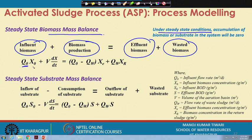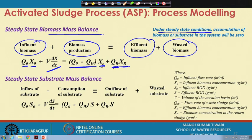Q₀ is the initial discharge and X₀ is the initial concentration. Q₀ × X₀ plus the rate of biomass production — V times dX/dt — is the total biomass being produced, where V is the volume of the aeration tank. X is the concentration in the effluent, Q₀ minus Qw is the effluent flow, Qw is the wastage sludge flow, and Xr is the concentration of biomass in the wastage sludge.